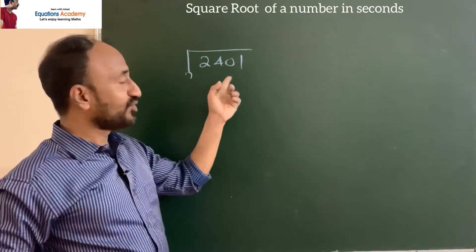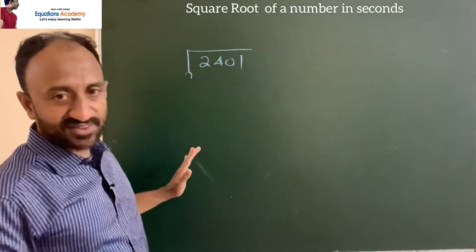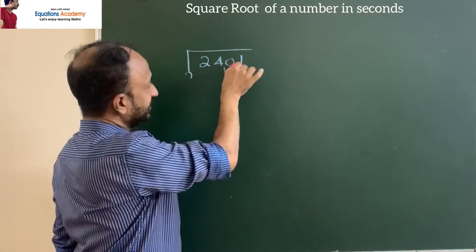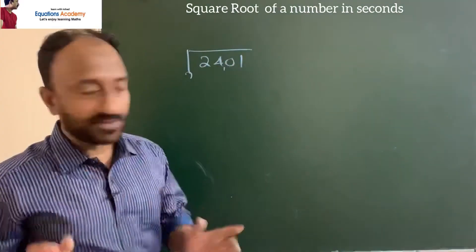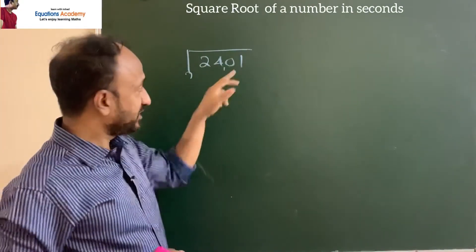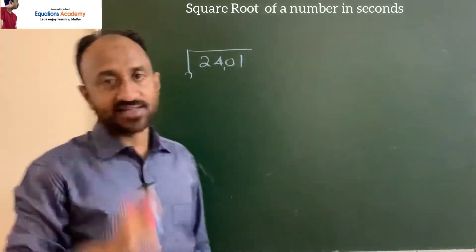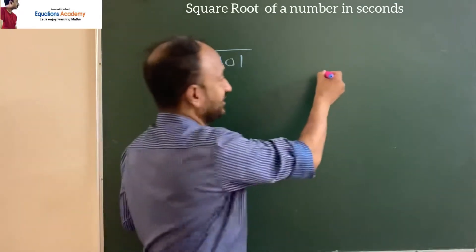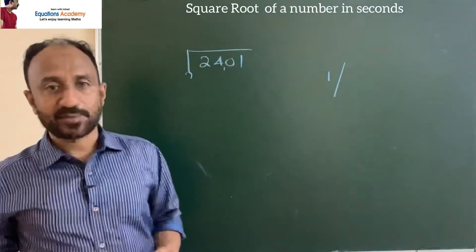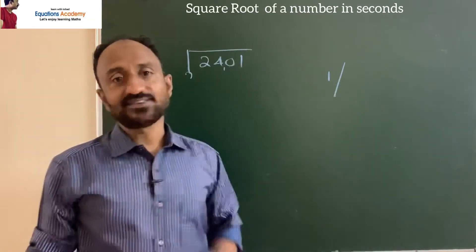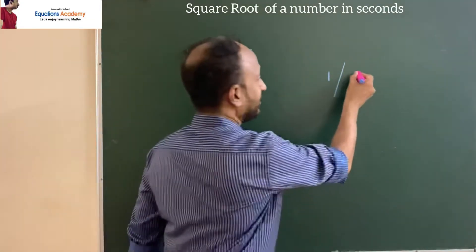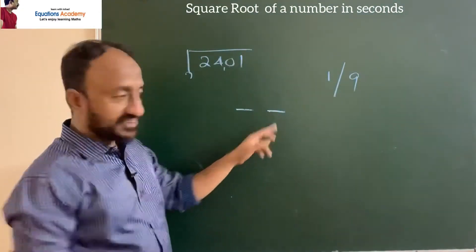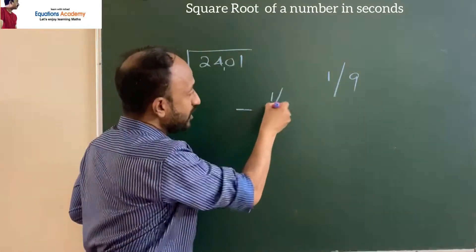Square root of 2401. The first step: pair from the right side — take this unit digit, 1. The 0 will not come into the picture. What are the numbers whose square ends with 1? 1 squared is 1, and 9 squared is 81 — unit digit is also 1. So in our answer, the unit's place digit will be either 1 or 9.